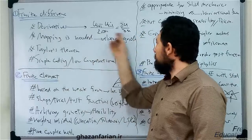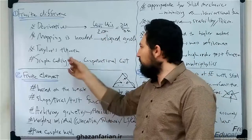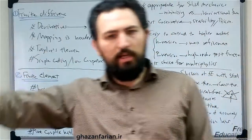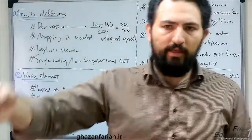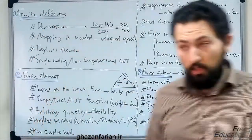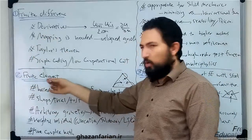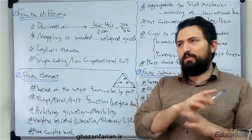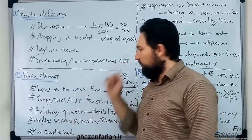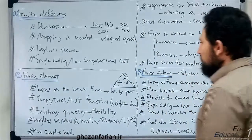The main concept behind obtaining relations between finite differences and derivatives is Taylor's theorem or Taylor's series expansion. You can find backward, forward, and central discretizations of first-order, second-order, or higher-order derivatives with different orders of truncation errors. Another advantage of the finite difference method is simple coding for straightforward geometries and lower computational costs in comparison to other traditional numerical methods.